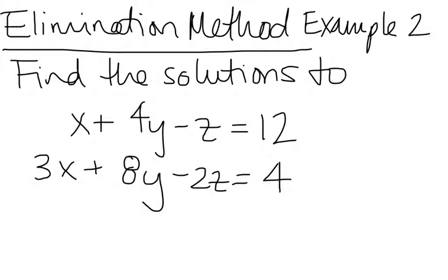We want to find the solutions to the linear system, where the first equation is x plus 4y minus z equals 12, and the second equation is 3x plus 8y minus 2z equals 4.